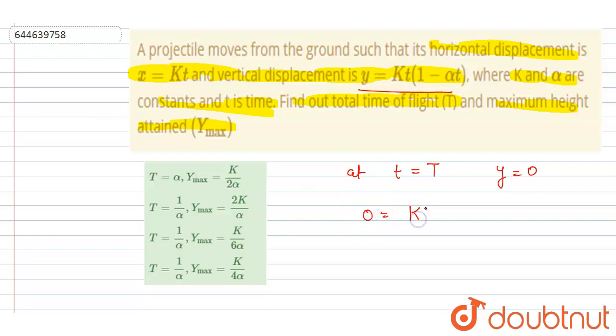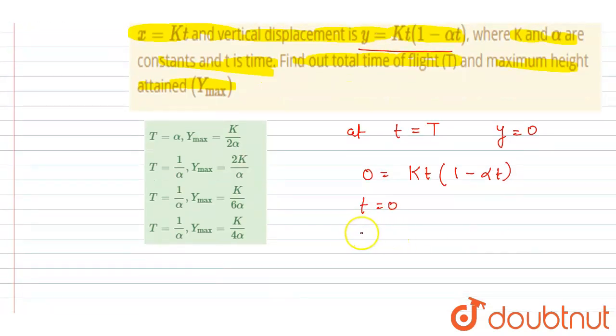= kt(1 - αt). So this y is zero at two times: once at t = 0 and next time when this term becomes zero, (1 - αt) = 0. From here you get the time of flight is 1/α. So this will be the